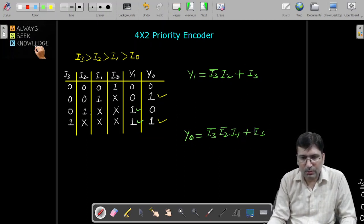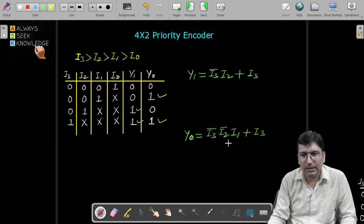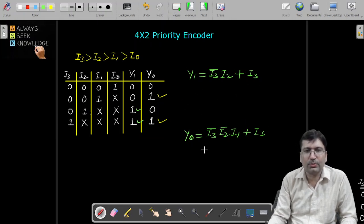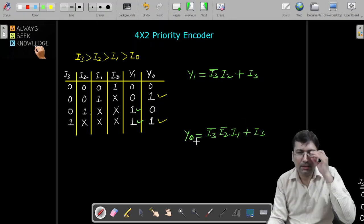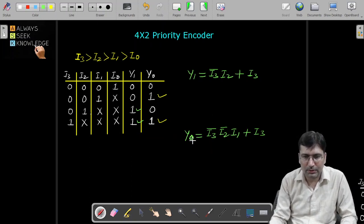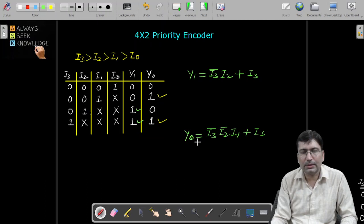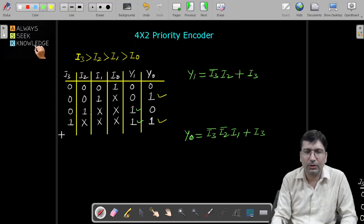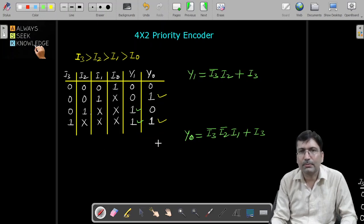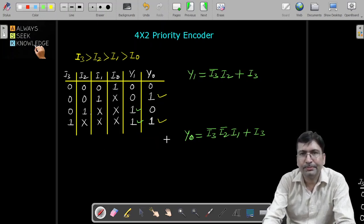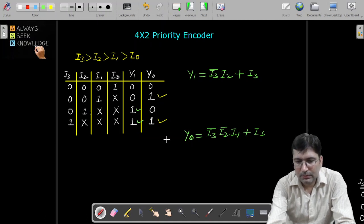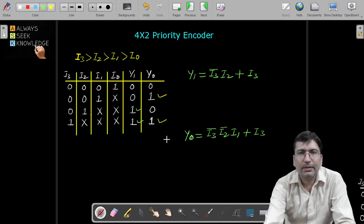Now there is no possibility to minimize this or either this expression. So this will be the final boolean expression of y0 and y1. This is priority encoder. Once or twice a question has been asked in GATE exam on this priority encoder. So with this I am closing this lecture. Thank you.